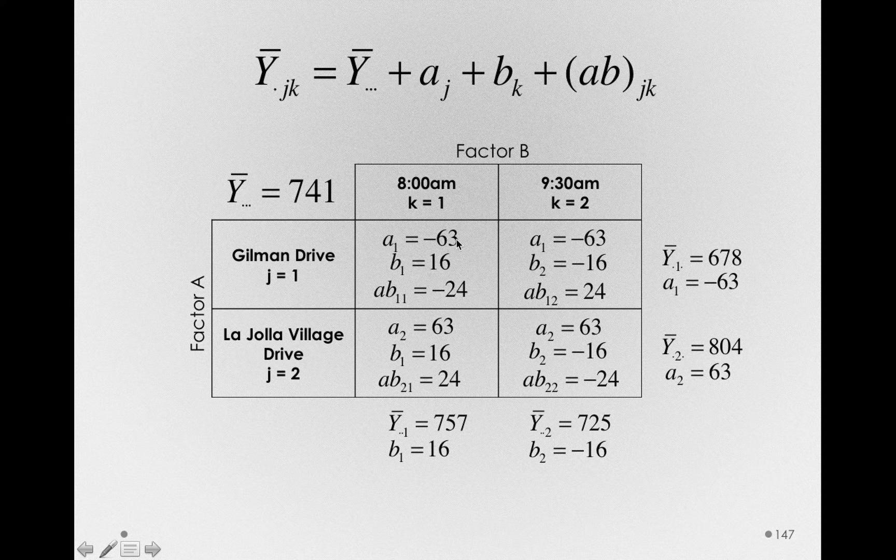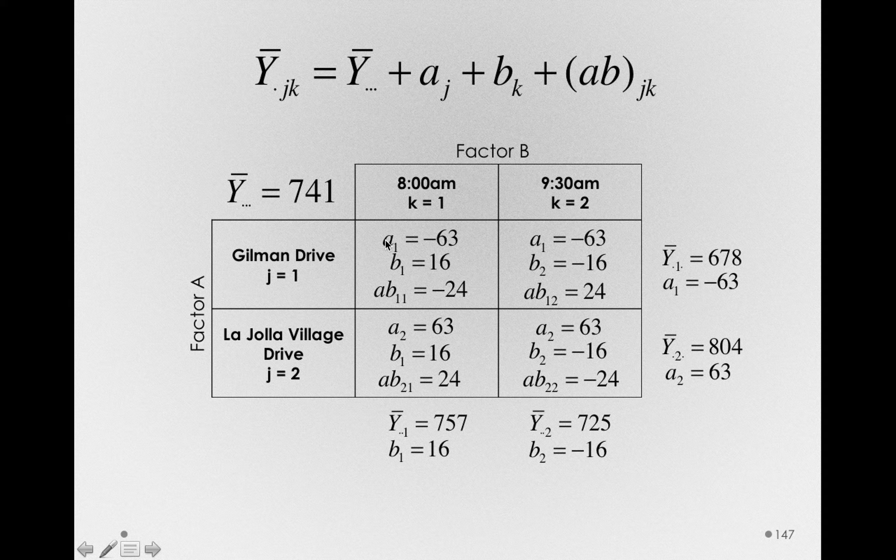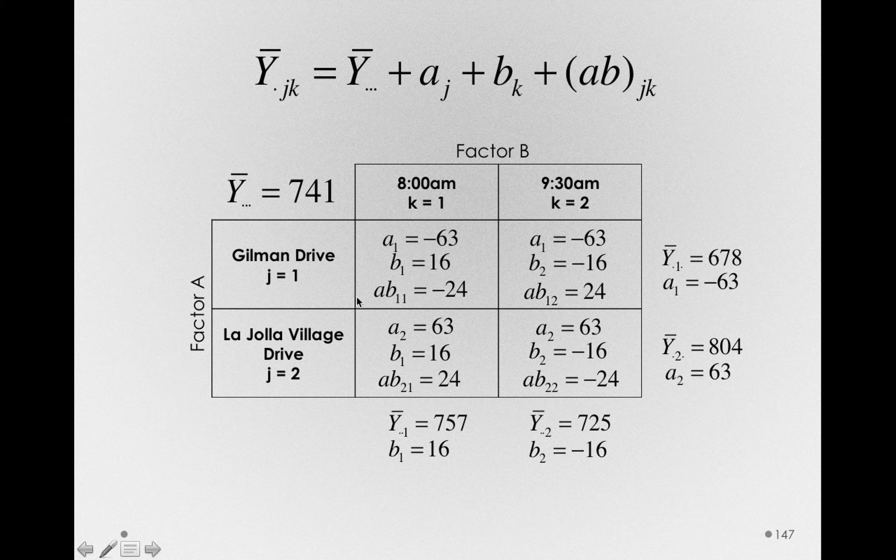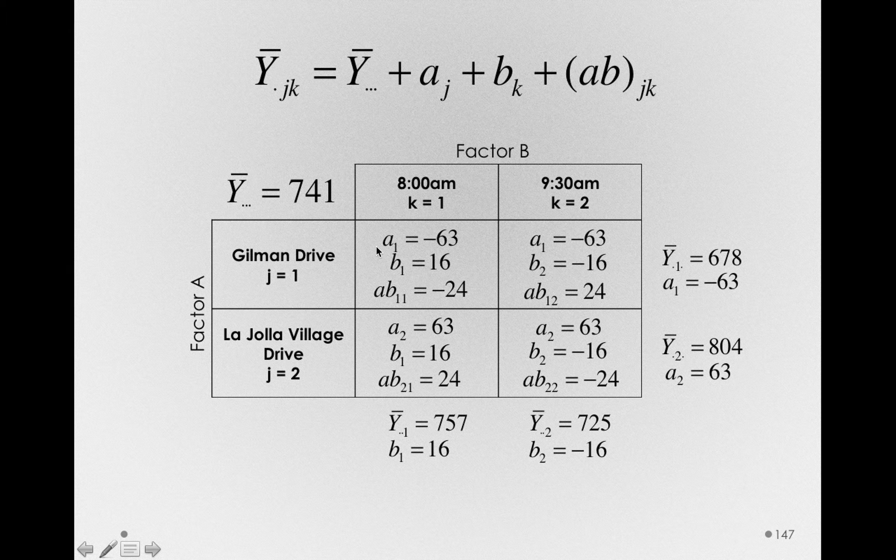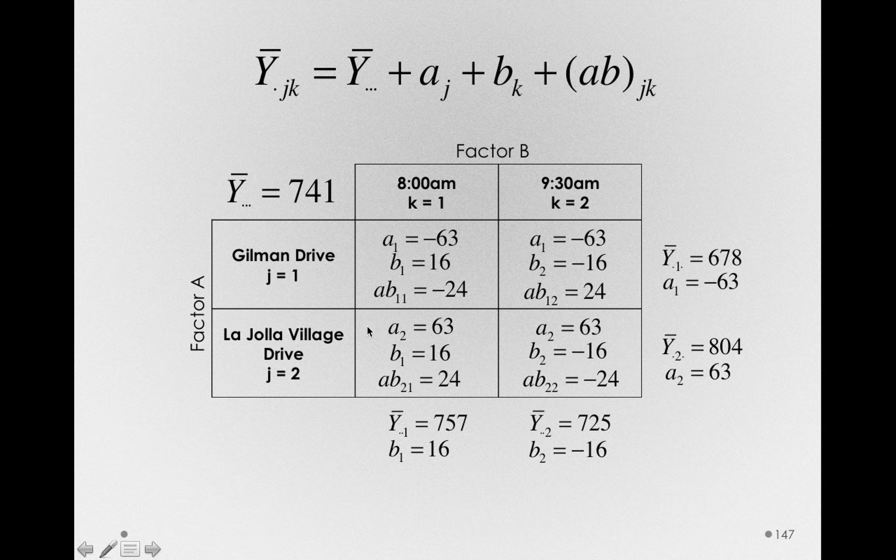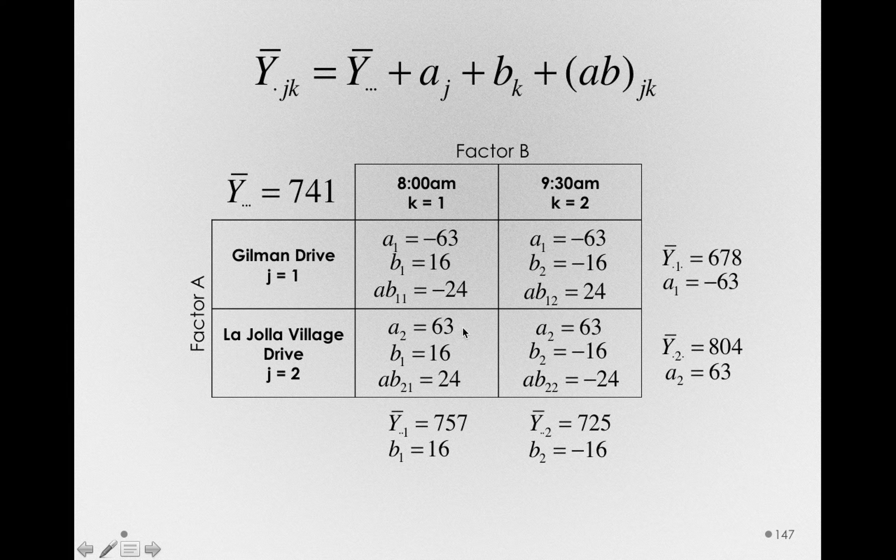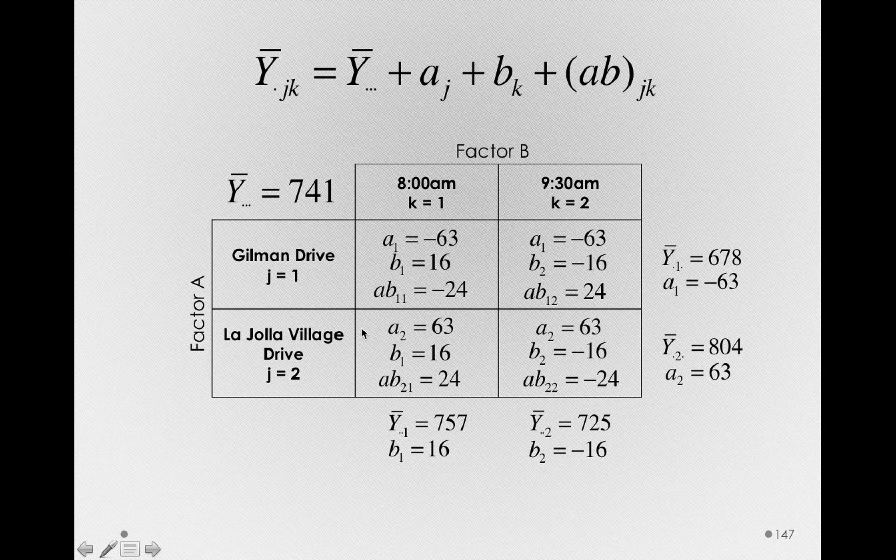We then estimated the effects of factor A, so we estimated the A terms. But remember, the A terms were yoked. The degree to which A1 was negative is the exact same amount that A2 is positive. So we lost only one degree of freedom in estimating that term.